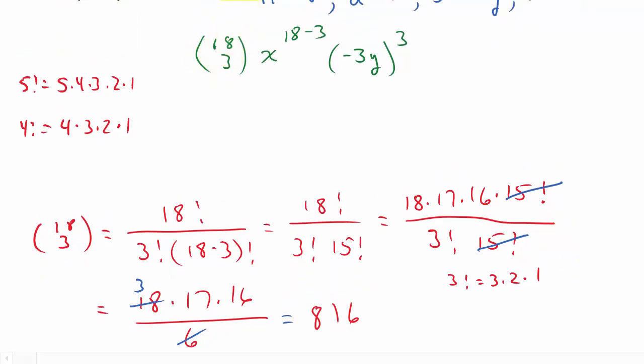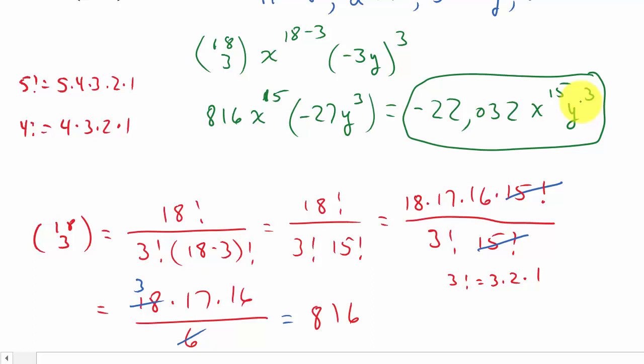So, this is 816 x to the 15th times, and then this, well, negative 3 cubed is negative 27. And, y cubed is y cubed. And, then you'll see I need to multiply those together. So, 816 times negative 27, that gives me negative 22,032. And, then x to the 15th, y cubed. And, that would be the term that contains y cubed.